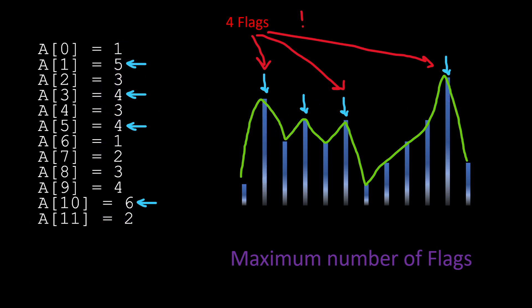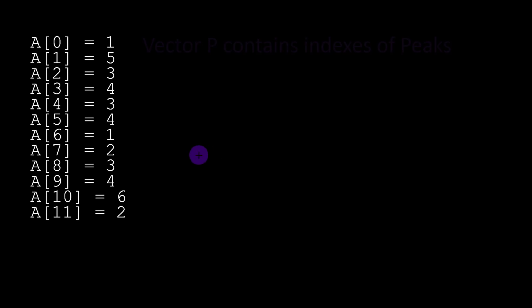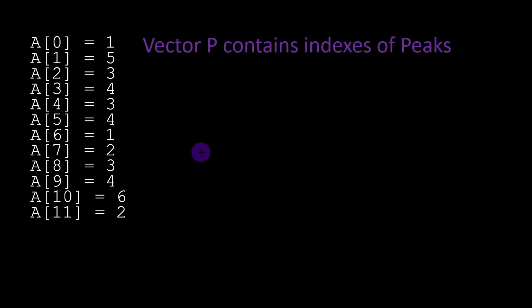I'm not going to describe the brute force approach because it's lengthy and inefficient. We'll directly explain the efficient solution. First, we declare a vector p standing for peaks, which contains the indexes of the positions of peaks in array a. For this example, it would contain index 1, index 3, index 5, and finally index 10 — the indexes of the four different peaks.